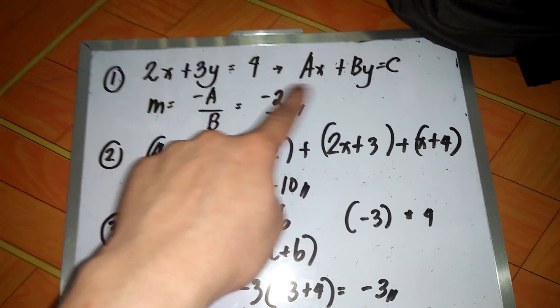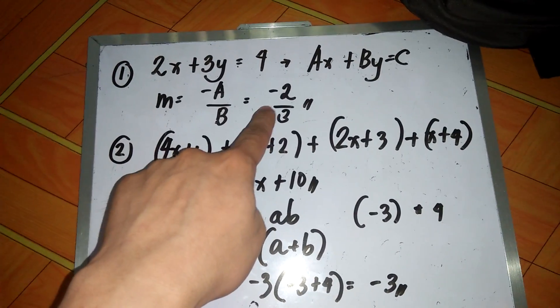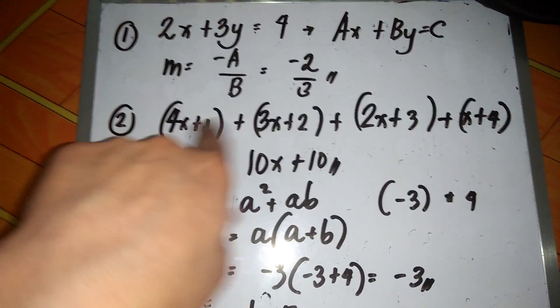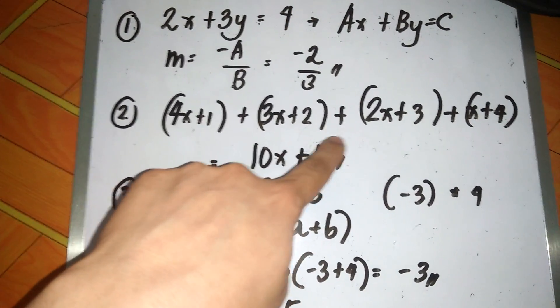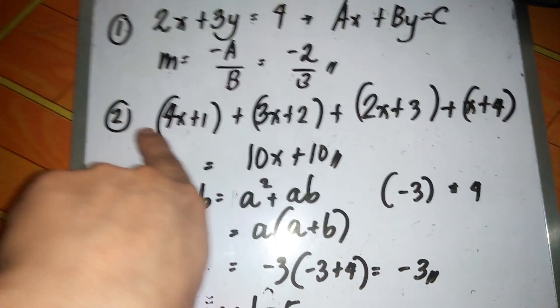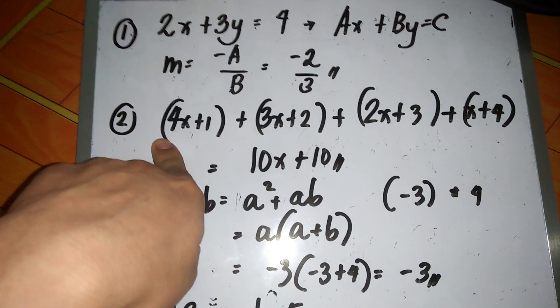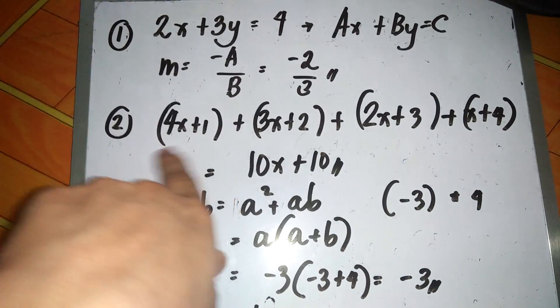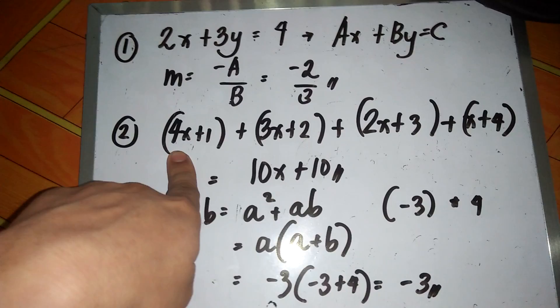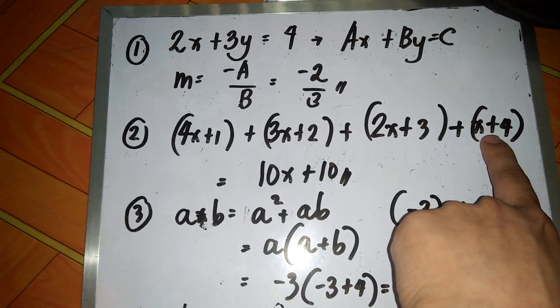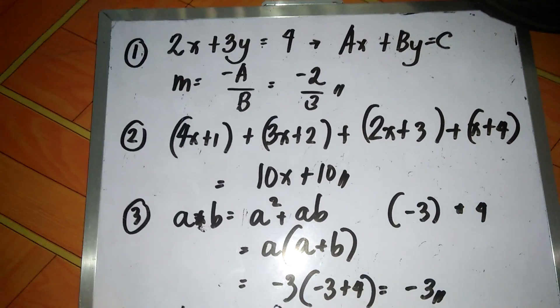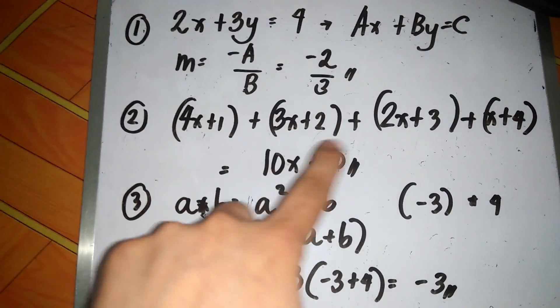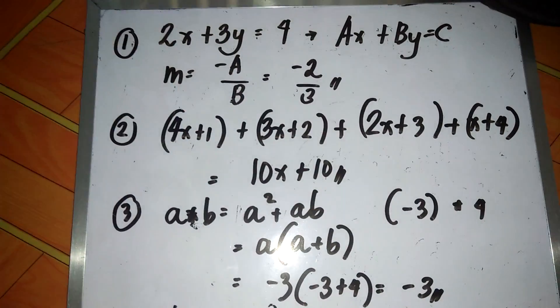For our second question, we have find the sum: 4x plus 1, 3x plus 2, 2x plus 3, and x plus 4. The members of the group should recognize that the coefficients of the first and the last are identical. It's just that the 4, which is the coefficient of x, is the constant in the last term. So we have 4 plus 3 plus 2 plus 1, that is 10x, and 1 plus 2 plus 3 plus 4, that is 10. So that is 10x plus 10.